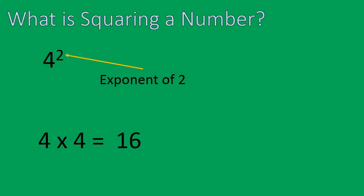So we multiply 4 times itself 2 times, right? 4 times 4 gives us 16. Now, why do we call this squaring a number?